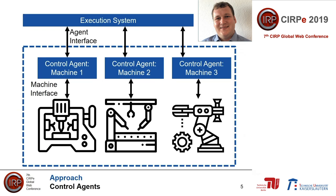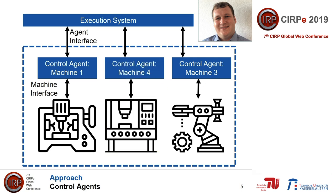The approach we took to enable the exchangeability of devices is that we provided each device with a matching and specific control software or agent. Between the execution system and the control software, the defined agent interface is equal for all different devices. Between the control software and the different devices, the machine interface can be different for all devices, as the main task of the control agent is to map the machine interface onto the agent interface. If a device is exchanged, the control agent is exchanged together with the device.